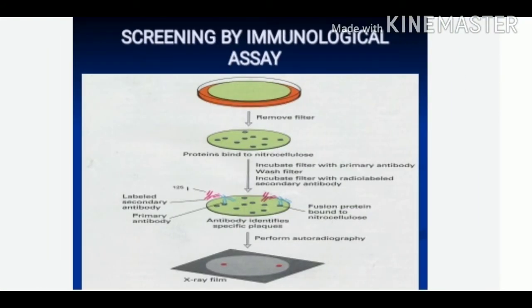The next method for screening is immunological screening. Recently, antibody techniques have been developed to identify protein products of cloned cDNA. Suppose we have an antibody which is reactive to a protein, or may be a part of a protein; the antibody can be used directly to detect if an E. coli or phage plaque contains the protein reactive to the antibody.